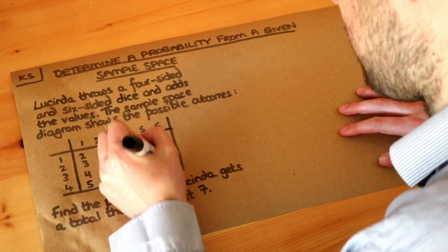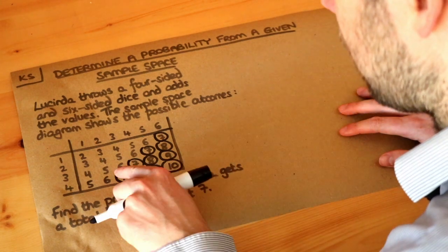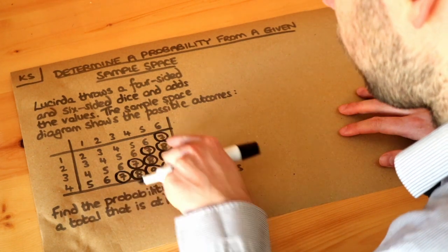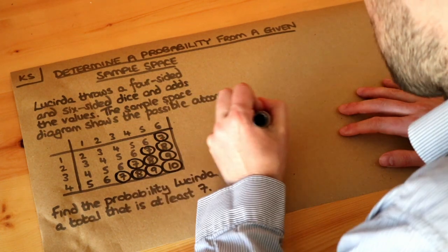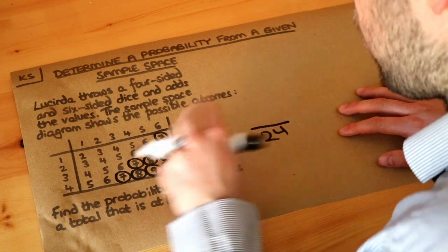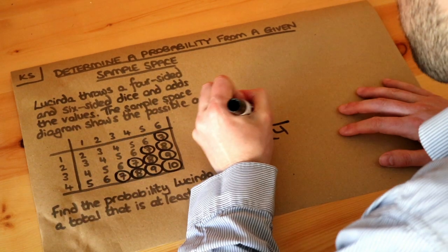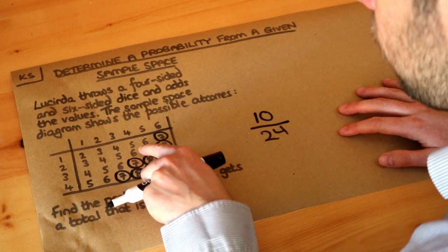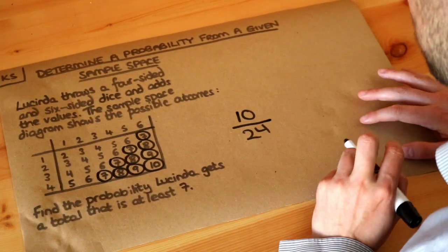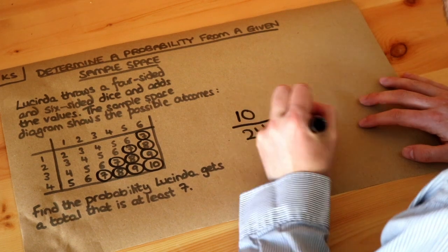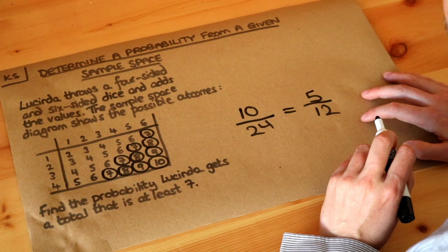We've also got these nines and the ten. Let's count how many possibilities there are: one, two, three, four, five, six, seven, eight, nine, ten. So out of the 24 possible combined outcomes, 10 of those give a total of at least seven. The answer is 10 out of 24, and we can simplify that — divide top and bottom by two — to get five out of 12. That's the final answer.